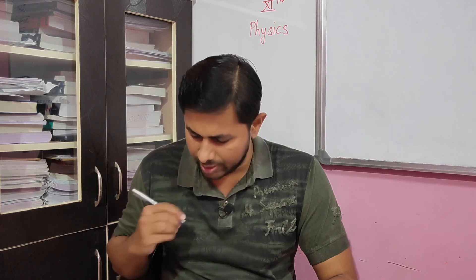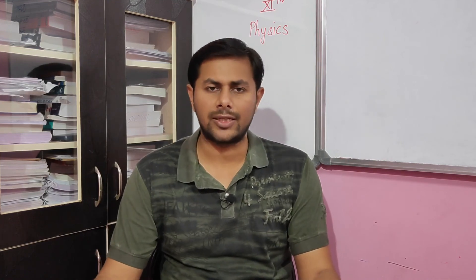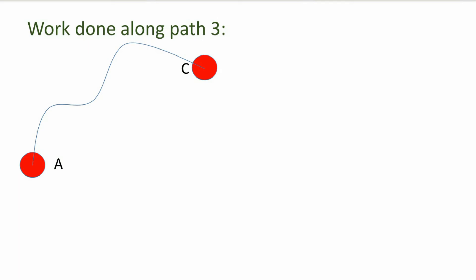Now let's calculate work done along path 3. Unlike paths 1 and 2, this is a curved path. To handle this, we divide the total path into n number of small segments: ds1, ds2, ds3, and so on. We calculate work done along each small segment and then add them all up to get the total work done.